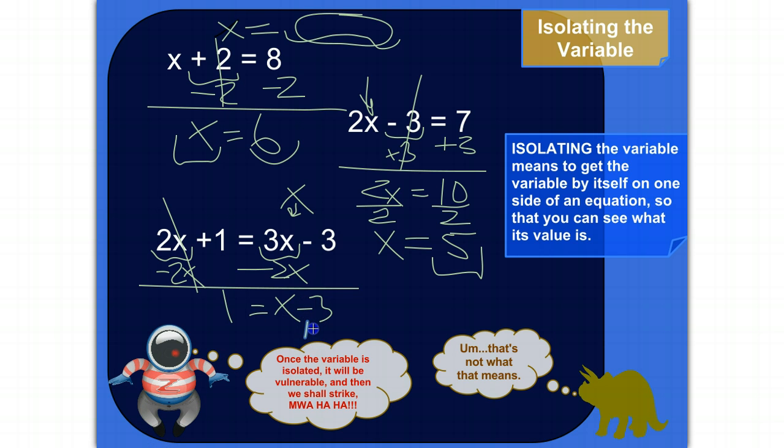The last thing we need to do is to add that three because three is being subtracted from x. So if we add three, that'll get rid of that. Add three to both sides. So this side becomes one plus three, which is four.